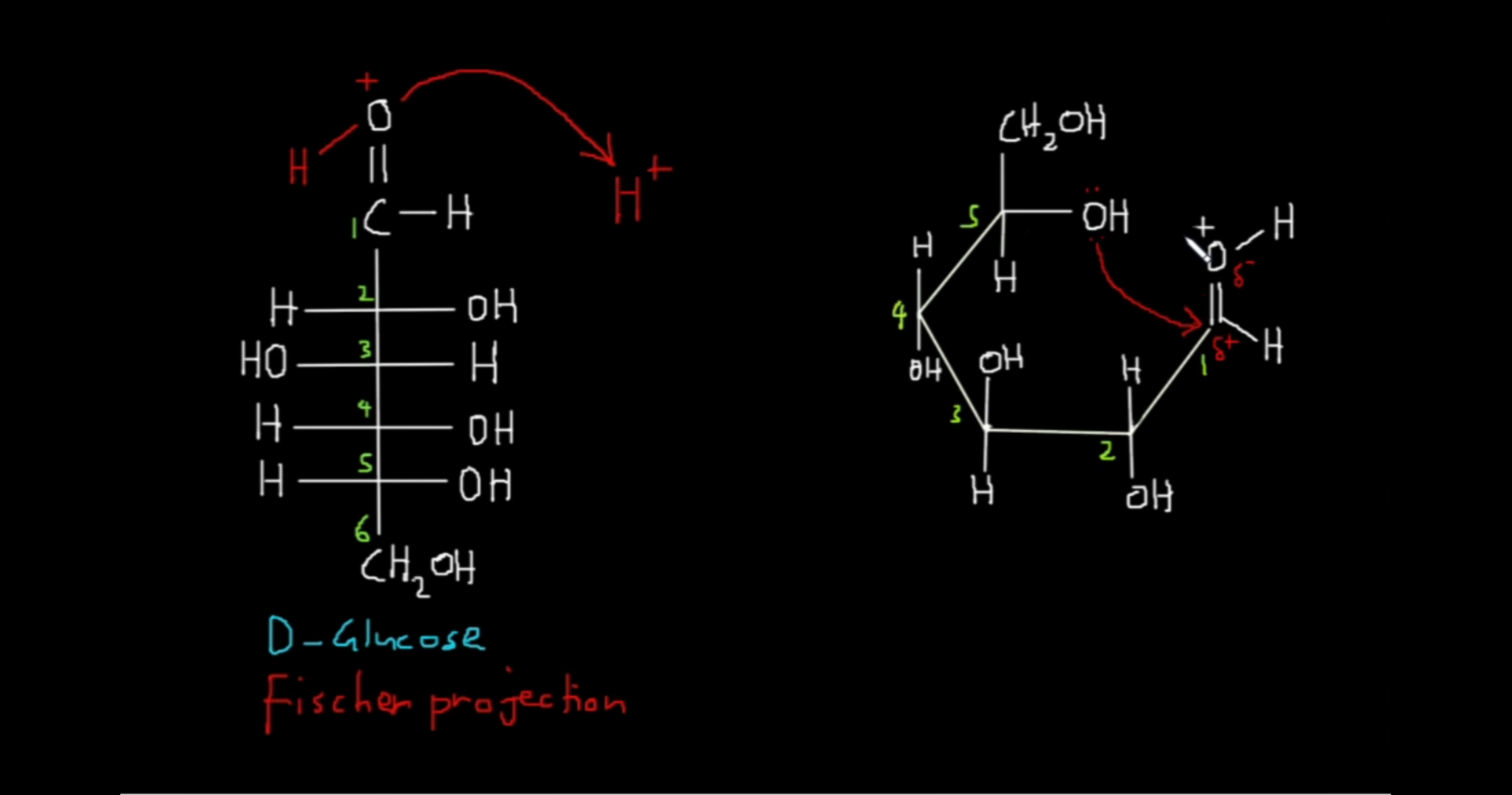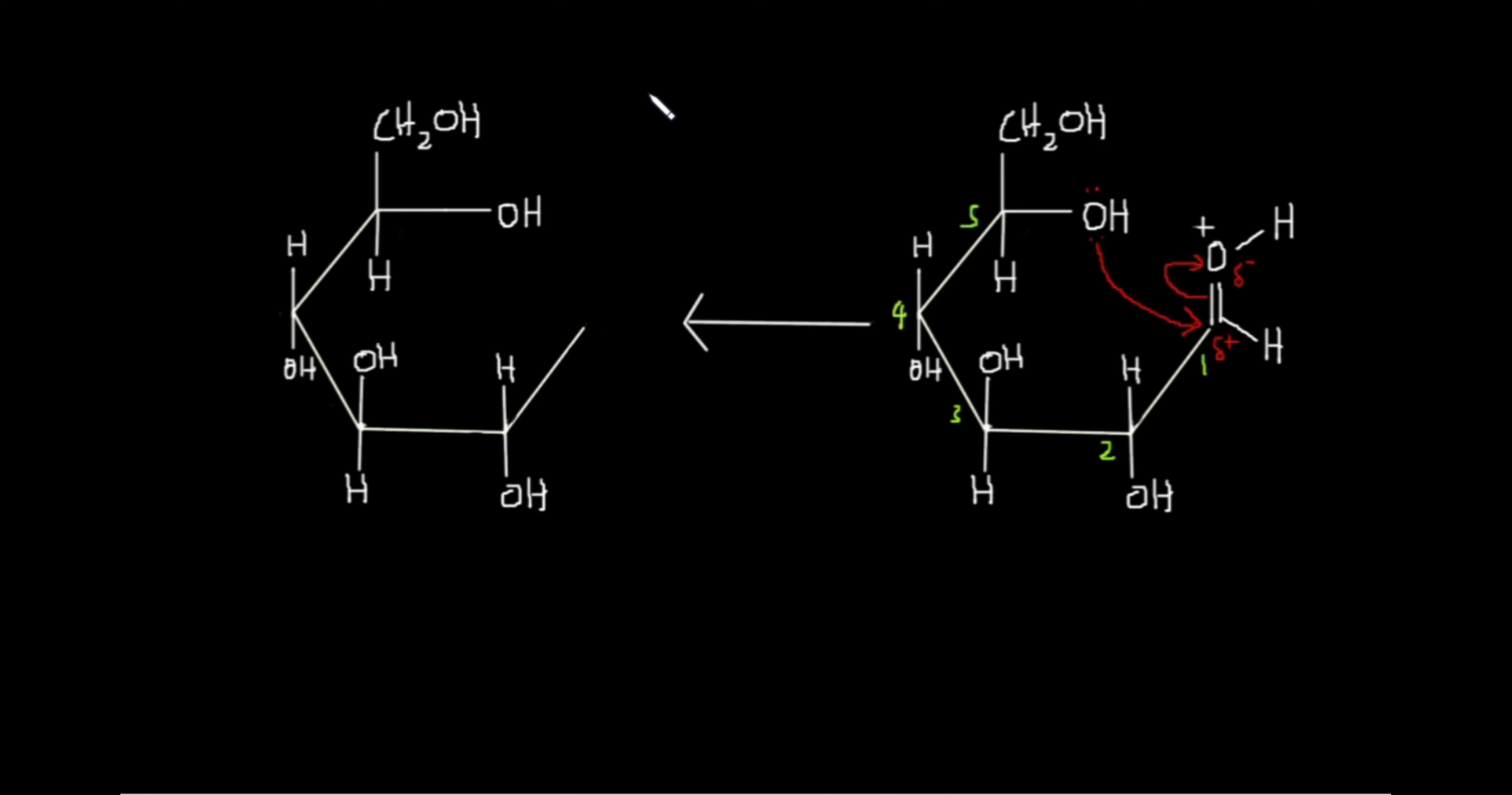Oxygen with a positive formal charge is highly unstable. It is against the nature of oxygen to have a positive charge, so it will try to get rid of it as fast as possible. To do that it will pull the pi electrons towards itself. Now this pi bond breaks and we can close the ring.